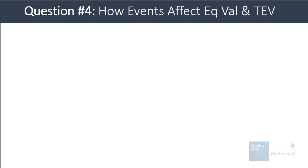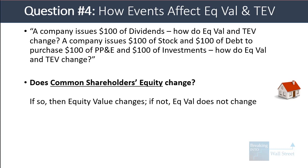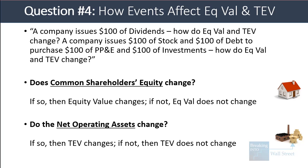The fourth question category is how events affect equity value and enterprise value. A common question: a company issues $100 of dividends — how do equity value and enterprise value change? Or a company issues $100 of common stock and $100 of debt to purchase $100 of PP&E and $100 of investments — how do equity value and enterprise value change? The two key rules: does common shareholders' equity change? If yes, equity value changes; if no, it doesn't. Do net operating assets change? If yes, enterprise value changes; if no, it doesn't.